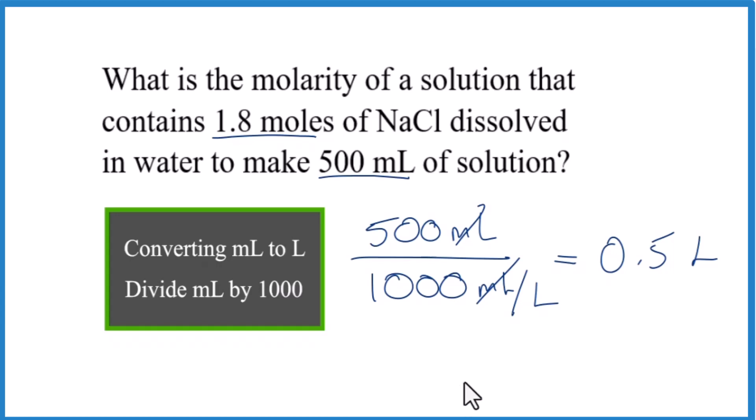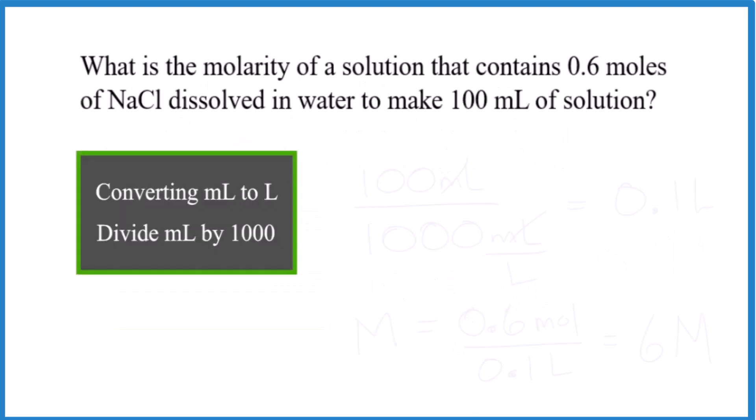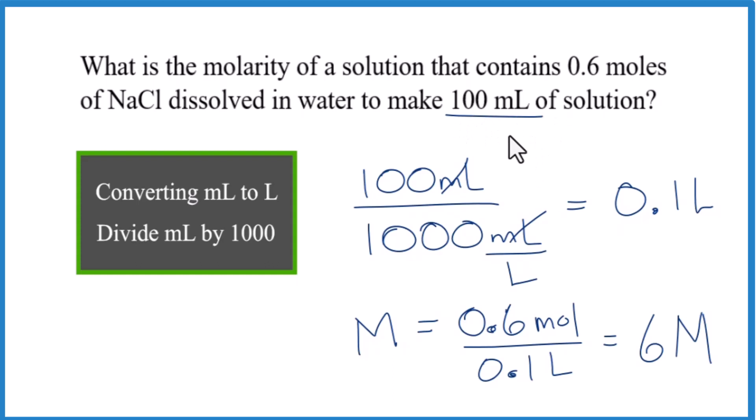So pause and give this one a try. So we've taken our 100 milliliters. We divided that by 1,000. We got 0.1 liters. Then we just use our equation. Molarity equals moles over liters. We end up with a 6 molar solution of NaCl.